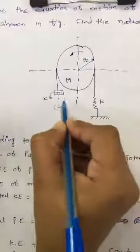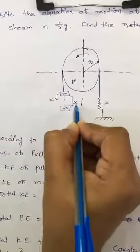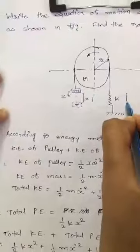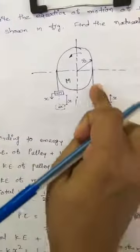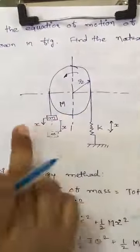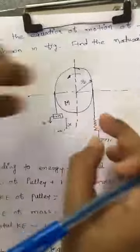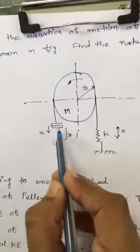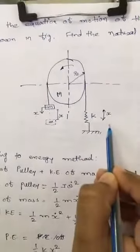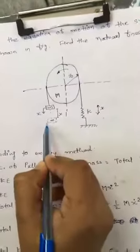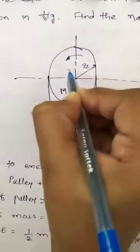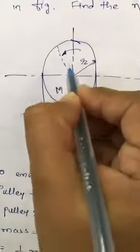x displacement is given to mass m, and here is a spring having stiffness k. When x displacement is given to mass m, this mass is displaced by x. When mass m is displaced by x, this spring will be stretched out by x displacement, because the whole string is connected. When x displacement is given to mass m, the pulley will rotate. When the pulley rotates, the spring will be stretched. So whatever displacement is given to mass m, the same displacement is given to the spring, and the pulley has a rotation — theta displacement of the pulley.